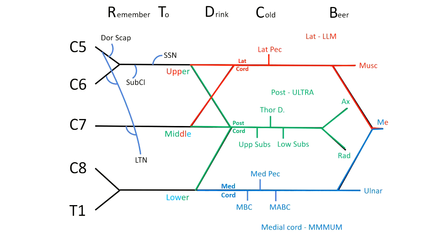it's MUM. So all the medial: medial pectoral nerve, medial brachial cutaneous, medial antibrachial cutaneous, the ulnar nerve, as well as the medial head of the median nerve.